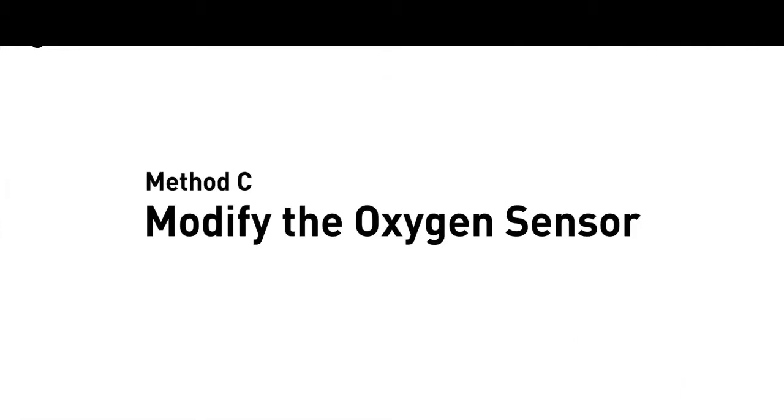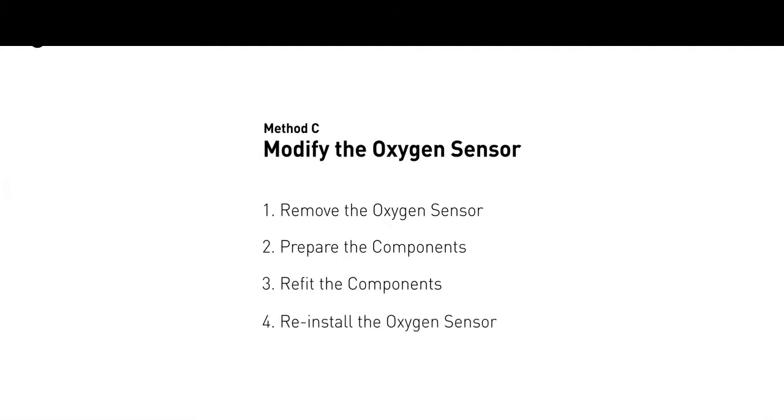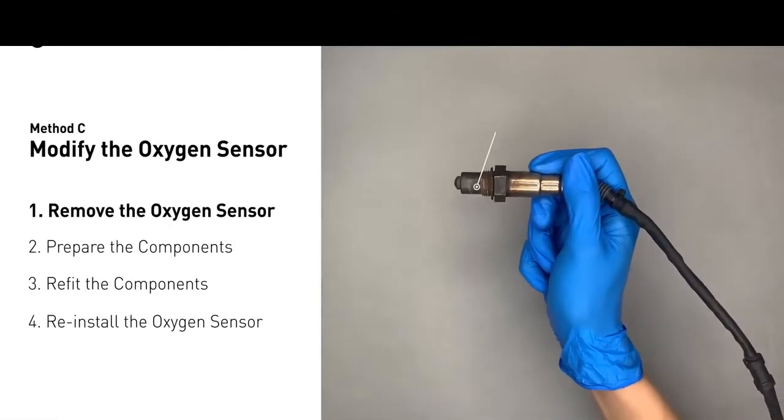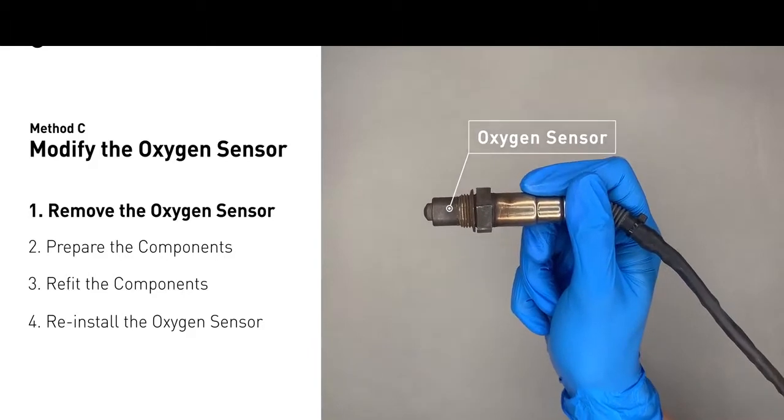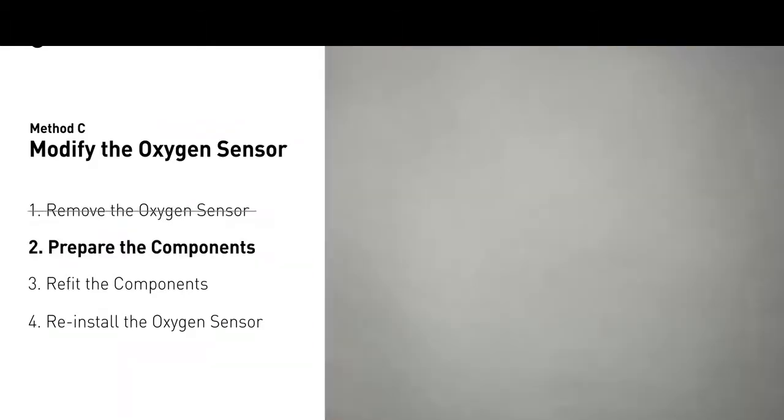Method C: modify the oxygen sensor. You can remove the oxygen sensor from the converter and fix P0420 by putting an extra space between the sensor and the converter. First, get a spark plug non-fouler.